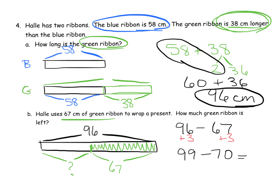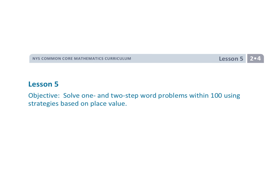So how much green ribbon is left over? 29 centimeters. And that is second grade module 4 lesson 5.